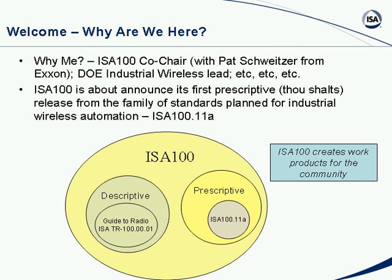We're up to 33 now on our sign-up sheet. I'm the co-chair; we have Pat Schweitzer from Exxon as the other co-chair. What we're here to talk about today is ISA 100. The goal of ISA 100 is to create work products — deliverables from our committee. The first prescriptive work product, meaning containing information that must be complied with in order to be compliant with ISA 100, will be coming out shortly.